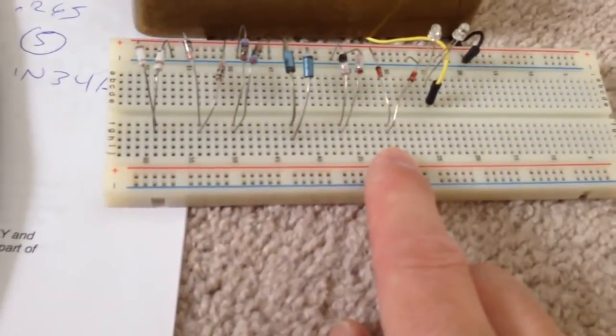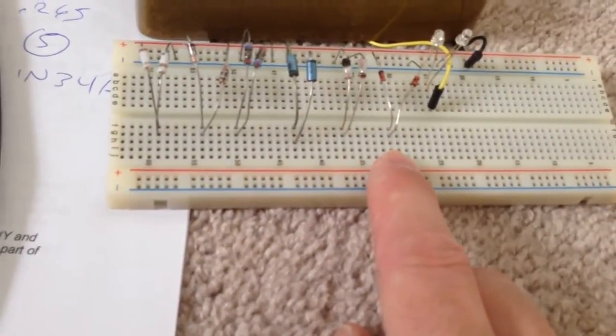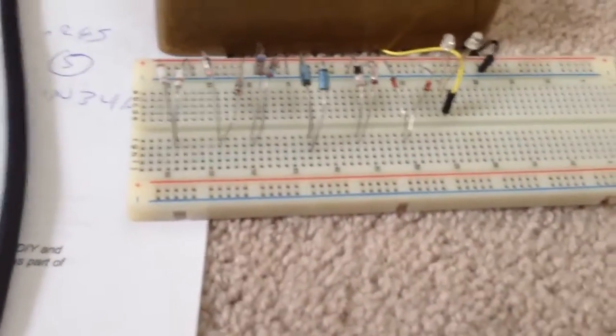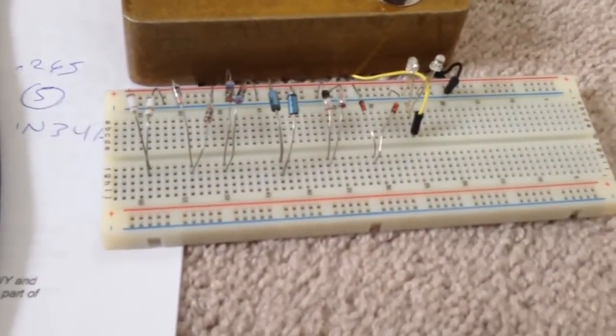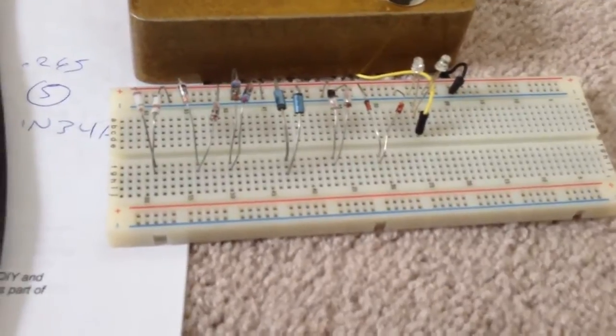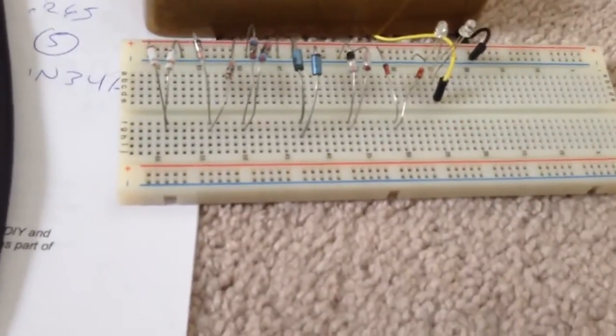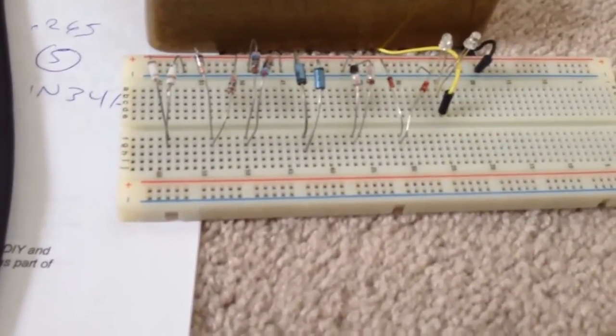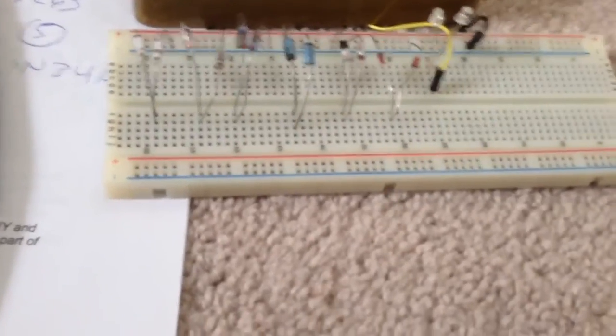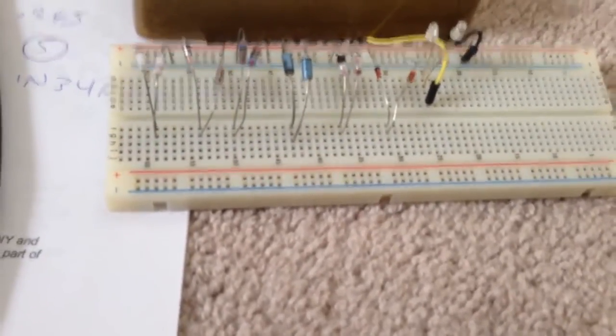These are silicon diodes, the 1N4148, similar to what you find in something like the Electro-Harmonix Soul Food. And just for fun, I have some LEDs. Cool thing about LEDs and overdrive circuits is when using them for clipping, when they engage they light up, so that's kind of cool.